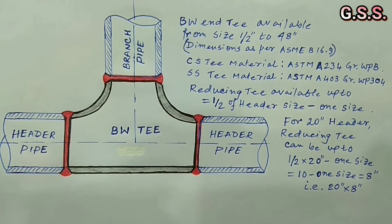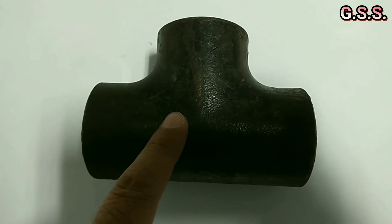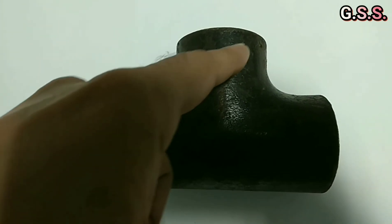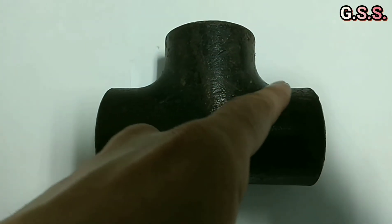This is an equal T and due to this curved shape, branch is very strong and less stress is generated.